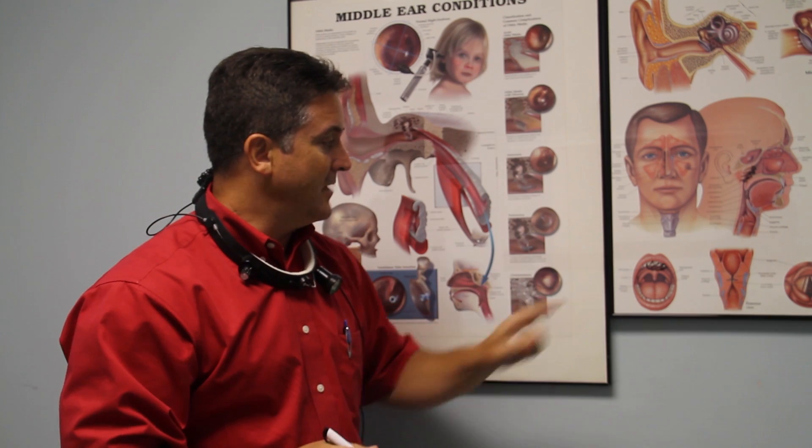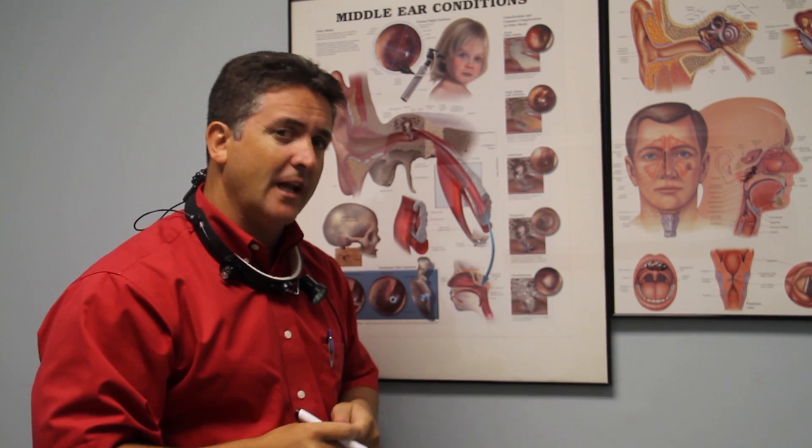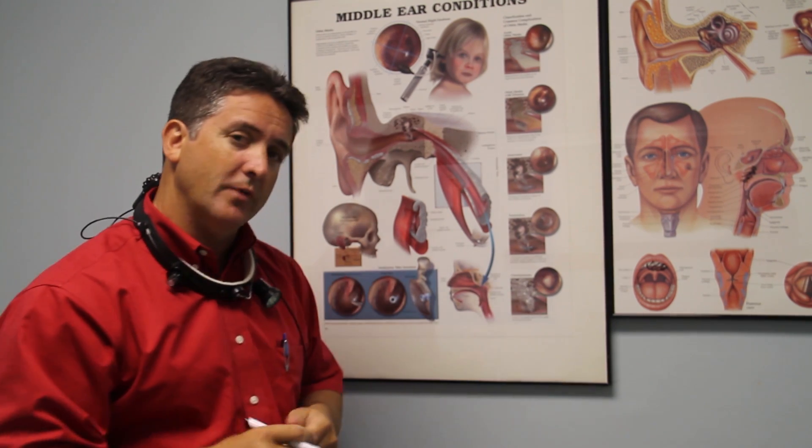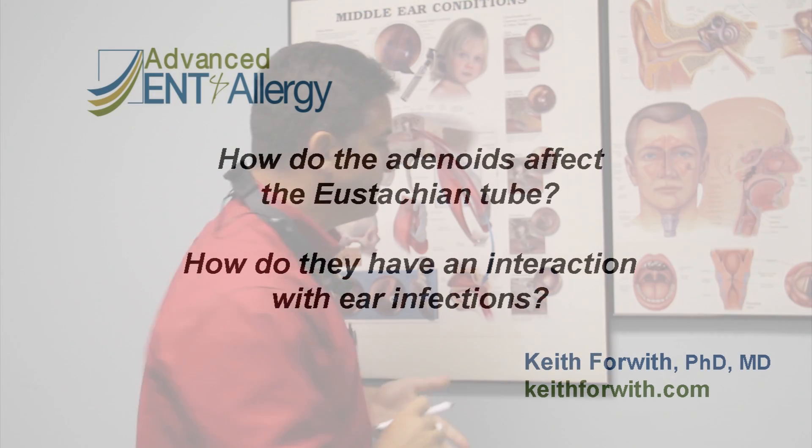They're in a different location and they serve much the same function. Adenoids, much like tonsils, when they go bad, you don't need them — kind of like an appendix. When it goes bad, you're better off without it.